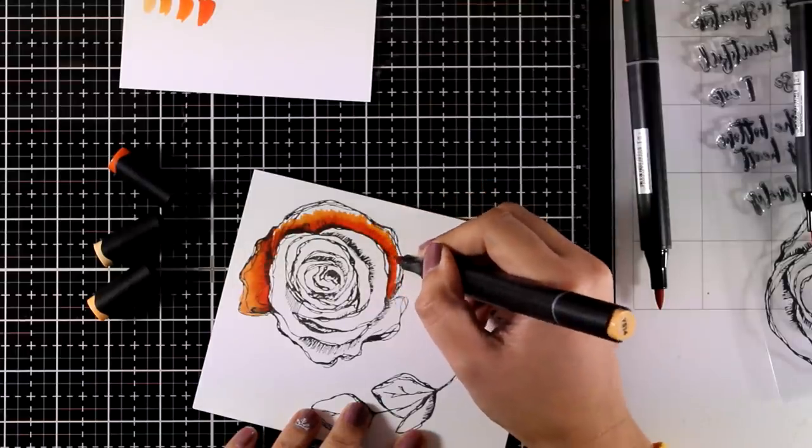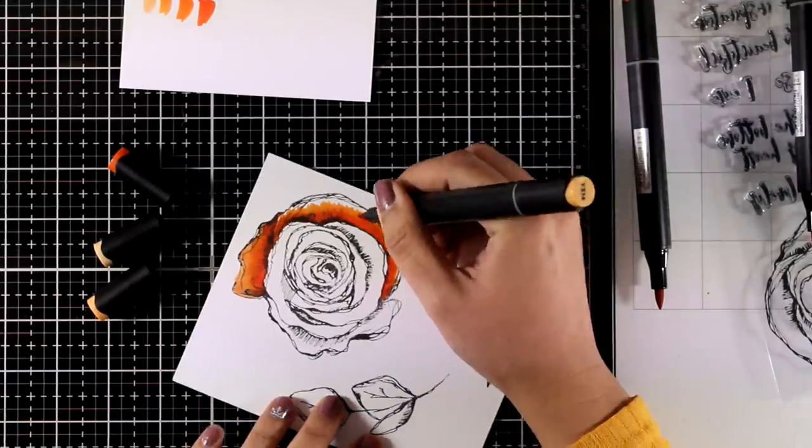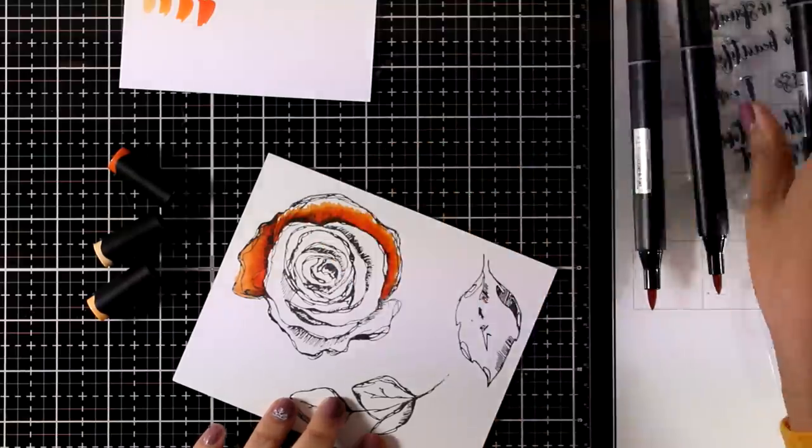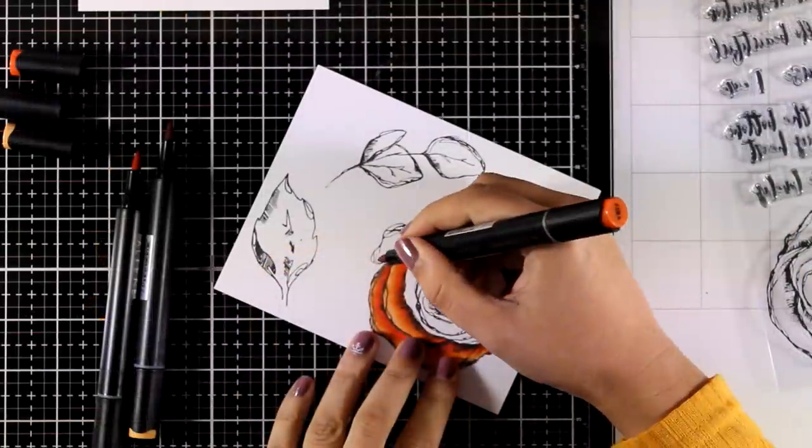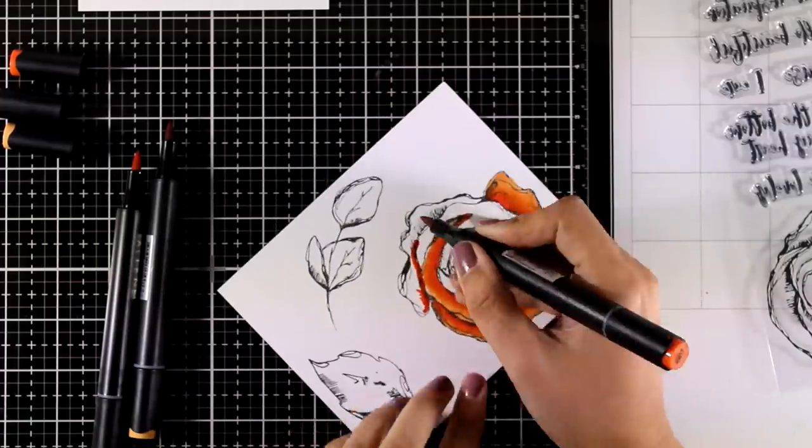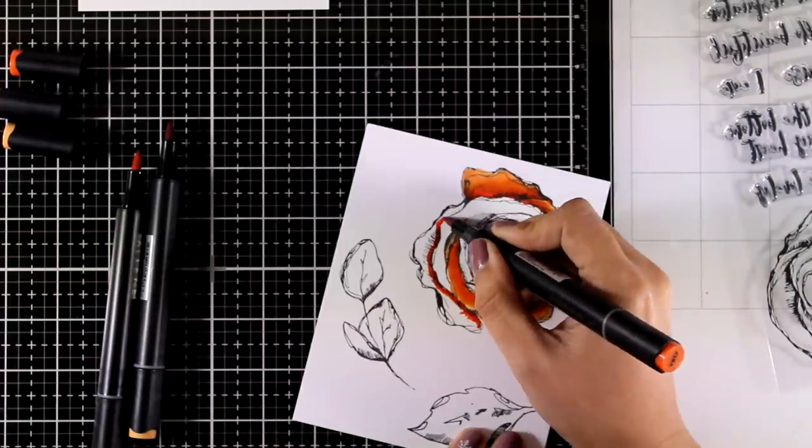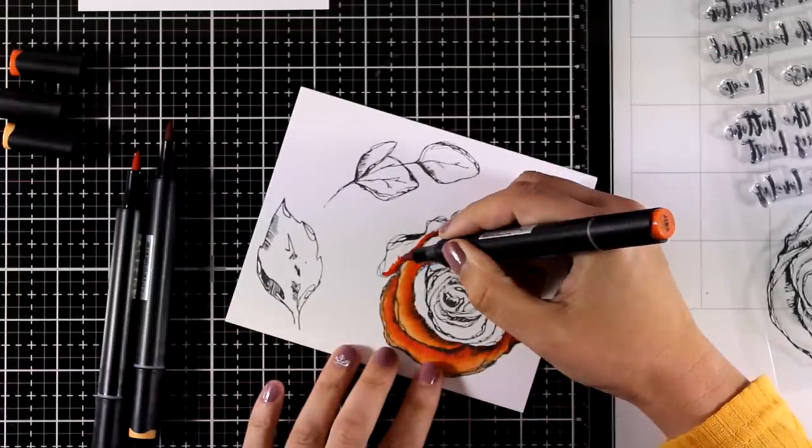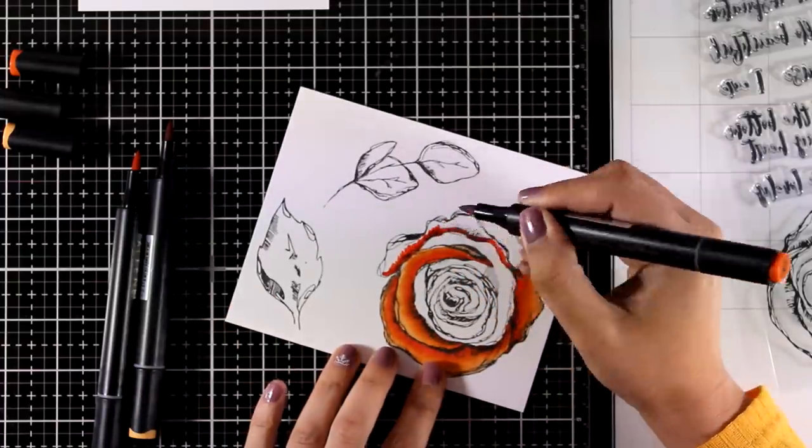Now this big rose is perfect for practicing your coloring skills with any medium really, with your alcohol markers, your pencils, your watercoloring. It could look beautiful any way you color it. Now the only thing I pay attention to is to where I am adding the darker shade.